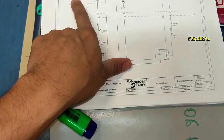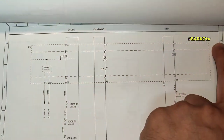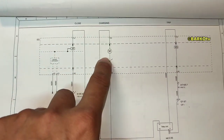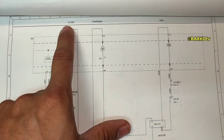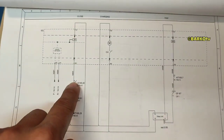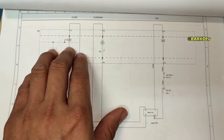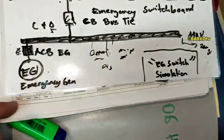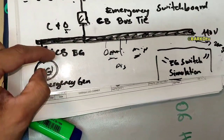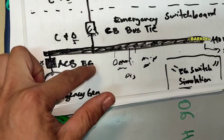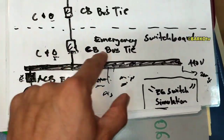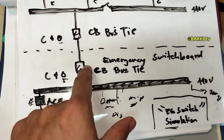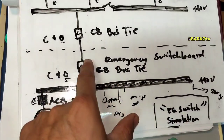The emergency generator running command is issued after the delay. This is the breaker for the emergency generator — there is a motor that charges the spring mechanism. This is the trip coil for open and this is for close. After the delay this will close the emergency ACB breaker, and the emergency generator will supply the switchboard. The simulation switch open and test commands open the bus tie breaker, the emergency generator runs, the ACB closes, and 440V is supplied.